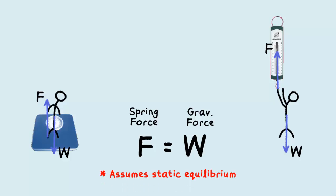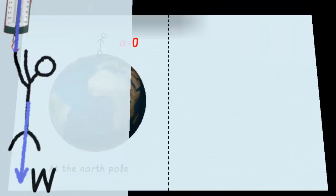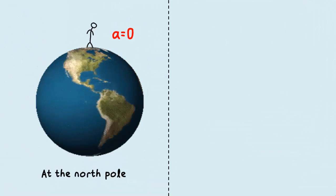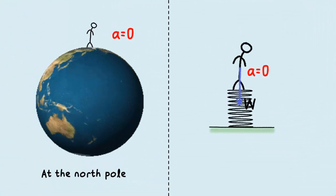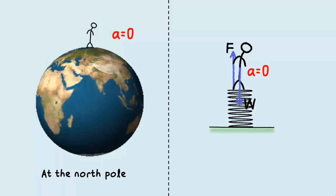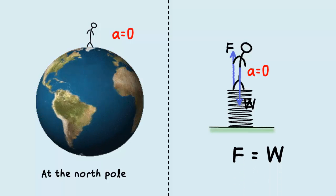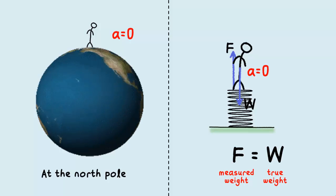But this method works only if the weighing is done with everything at rest. If you are at the pole, a resting object is truly at rest. The net force is zero, so spring force is equal to the gravitational pull. What we measure is the true weight.